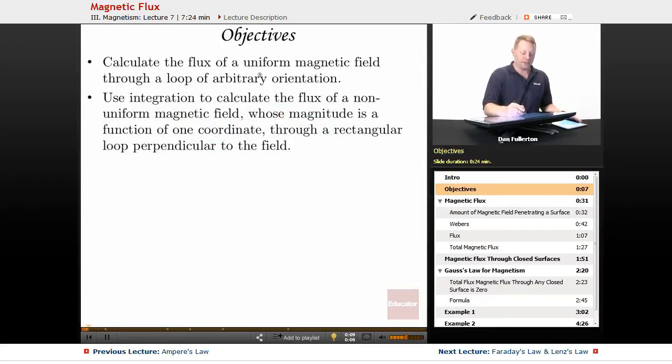Our objectives include calculating the flux of a uniform magnetic field through a loop of arbitrary orientation, and using integration to calculate the flux of a non-uniform magnetic field whose magnitude is a function of one coordinate through a rectangular loop perpendicular to the field. Sounds complicated, but when you see the setup and the example problem, it'll be nice and straightforward.